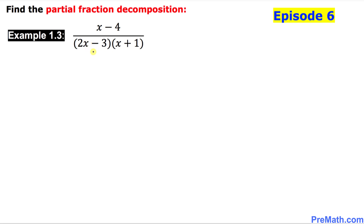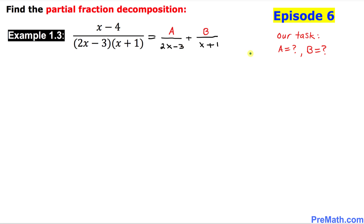Let's look at our denominator. We have two linear factors, so that means we are going to put down two fractions separated by a plus sign. The first fraction will have denominator 2x minus 3, and the other will have denominator x plus 1. On the numerator we're going to have constant A on the first fraction and constant B on the second. Our task is to find the value of A and B.